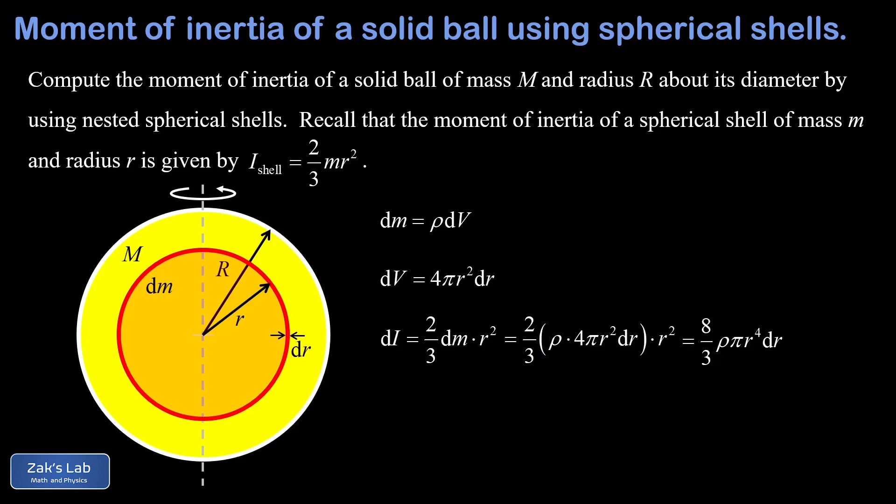So now that we've expressed our moment of inertia contribution entirely in terms of little r, we're ready to add up all the contributions using a physical integral. So we write that the total moment of inertia is the sum of all the dI's. And that's what an integral does, summing up all the differential contributions. And then we just replace dI with our expression in terms of r. And so we're left with the integral of eight thirds rho pi r to the fourth dr. And again, the limits of integration go from zero to big R as we build up this solid sphere from nested shells.